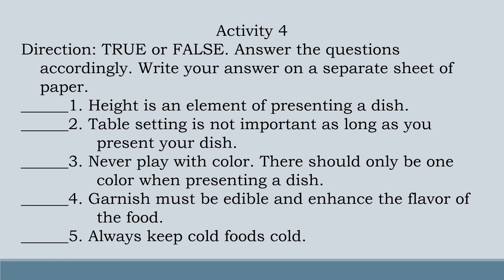Activity 4 — Direction: True or false. Answer the questions accordingly. Write your answer on a separate sheet of paper. Number 1: Height is an element of presenting a dish. Number 2: Table setting is not important as long as you present your dish. Number 3: Never play with color — there should only be one color when presenting a dish. Number 4: Garnish must be edible and enhance the flavor of the food. Number 5: Always keep cold food cold.